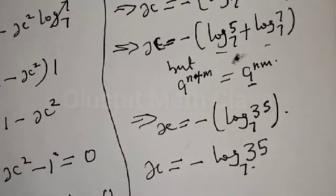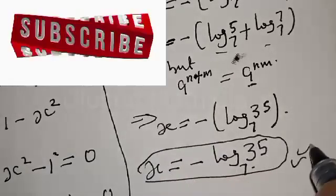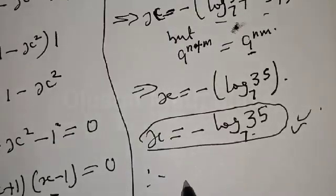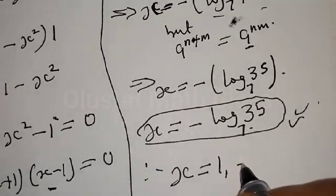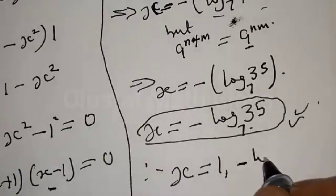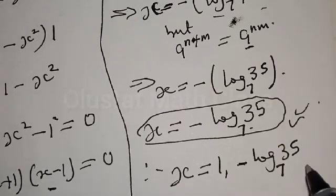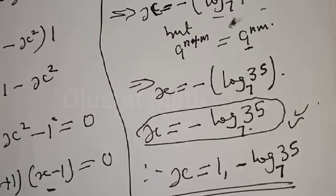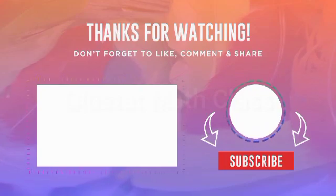Therefore our final answer is: the values of x are x equals 1 and x equals minus log 35 base 7. If you have enjoyed the class, please don't forget to like, share, comment and subscribe. Thank you.